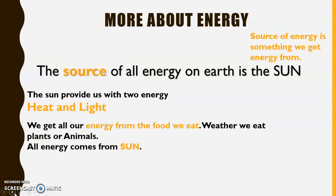The source of all energy on Earth is the sun. The source of energy is something we get energy from. The sun provides us with two types of energy: heat and light. We get all our energy from the food we eat, and whether we eat plants or animals, all energy ultimately comes from the sun.